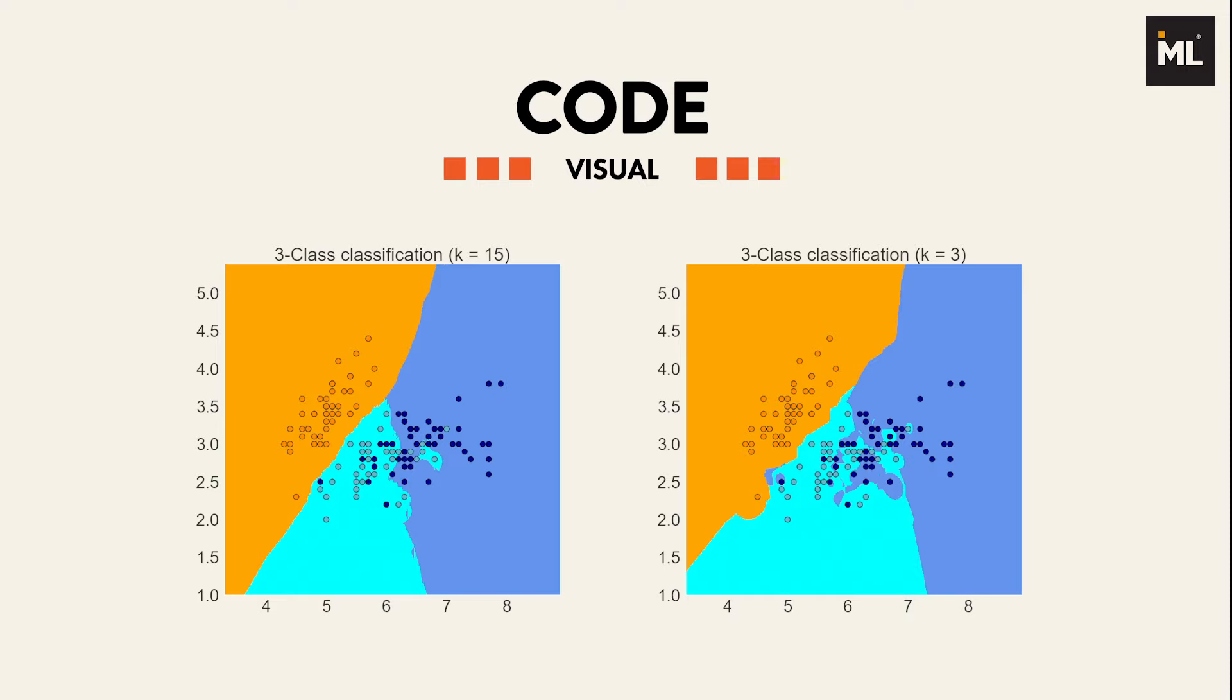These two plots are real visualizations from the previous code example with different K settings. The left plot shows the classification decision boundary with K equal to 15, and the right plot is for K equal to 3.